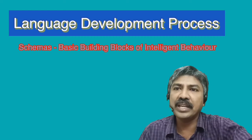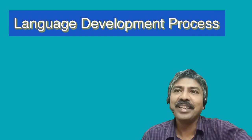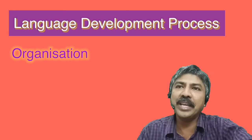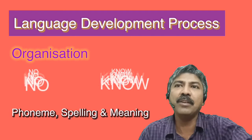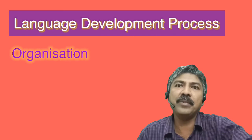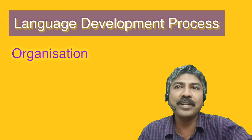Piaget feels that as the child gets older, his or her schemas become more numerous and vibrant, leading to language proficiency. The next concept is organization, which typically involves grouping of isolated behavior and thoughts into higher order systems. For example, in English language, the difference between 'no' (N-O) and 'know' (K-N-O-W) in terms of phoneme, spelling and meaning will get organized. It is a continuous process where the child tries to construct meaning of these terms and their differences, storing the similarities and differences in the brain for effective communication.